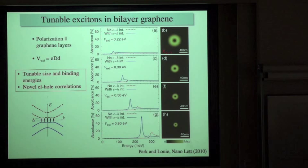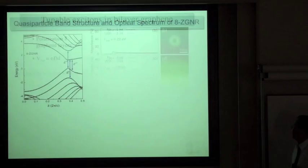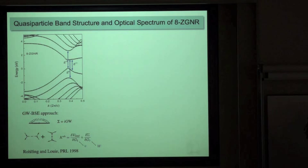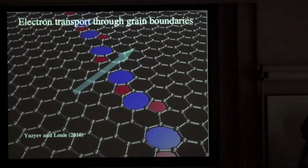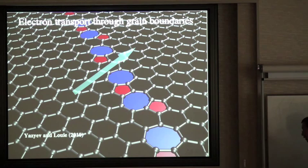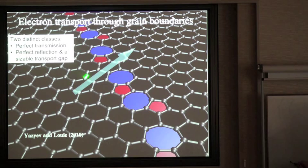The calculated exciton energies agree well with recent experiments. For nanoribbons, excitonic effects are very strong — exciton binding energies can be as large as half an electron volt. Regarding transport through grain boundaries, we find two distinct classes: one kind of grain boundary gives perfect transmission, while another gives perfect reflection with a sizable gap, suggesting grain boundaries could potentially be used to engineer a gap in graphene for device applications.